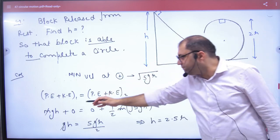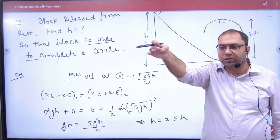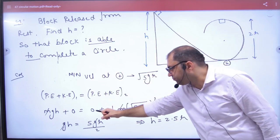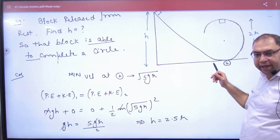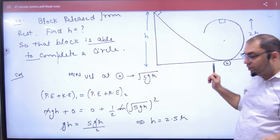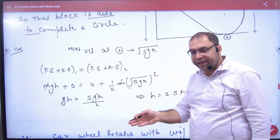At this point, potential is mgh, kinetic is zero - dropped from rest. At this point at top, kinetic is ½mv². Velocity should be √(5gr) for the circle. Squaring and solving gives h = 2.5r.